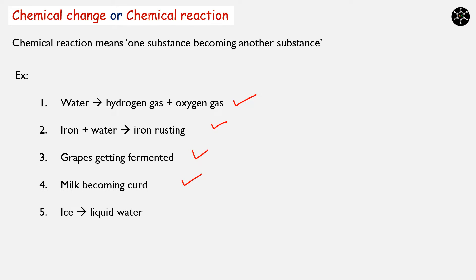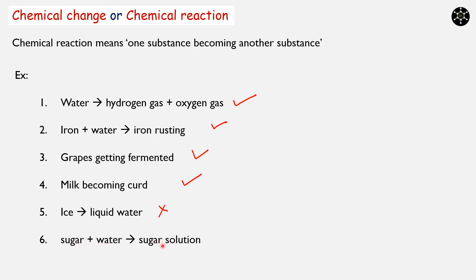But if you consider solid ice becoming liquid water, we are having H₂O in the form of solid ice and H₂O in the form of liquid water, so this change is purely a physical change and not a chemical change. In the same manner, if we make a sugar solution using water, the substance sugar remains the same before and after the change, so it is also not a chemical change but a physical change.